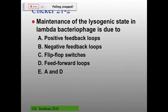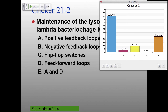Positive feedback loops are an activator leading to expression of an activator. Negative feedback loops are repressors leading to repression of that original gene. Flip-flop switches are two negative regulators repressing each other's genes. Feed-forward loops involve two activators. In the lysogenic state, it's an activator expressing its own gene — a positive feedback loop with a single activator. So A is correct.